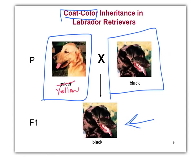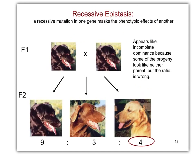From the F1 alone, we don't know much. This could just be complete dominance, a regular one-gene trait. You can't tell anything just from the P to the F1. The information really comes out in the F2.